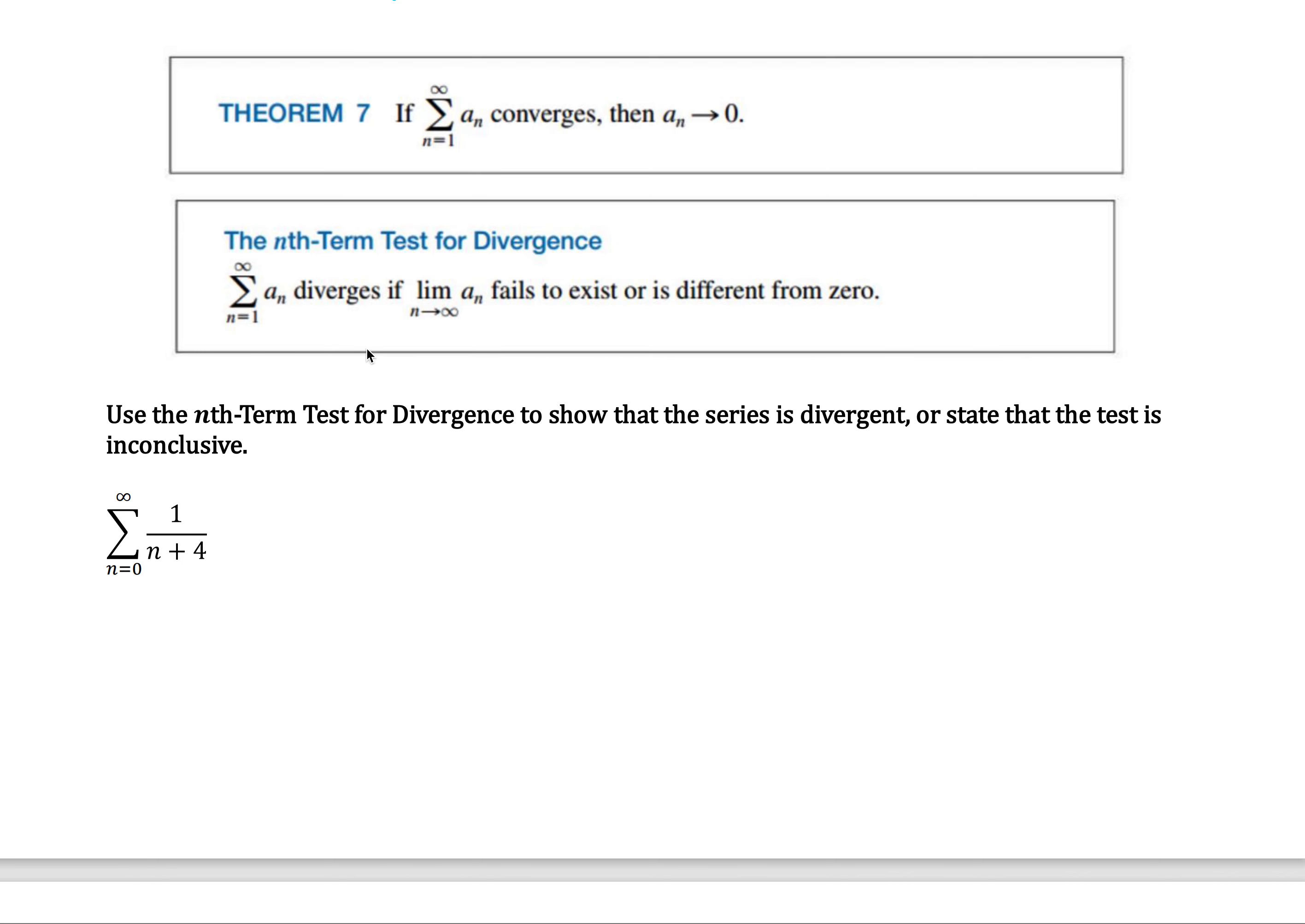And that leads us to the nth term test for divergence. Keep in mind the nth term test tells us nothing about whether or not a series converges, but it can tell us if a series diverges. It says that a series diverges if the limit of a sub n either fails to exist or if it's different from zero.